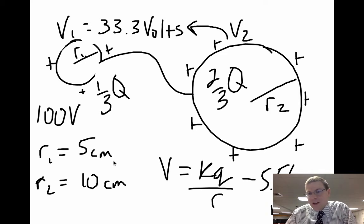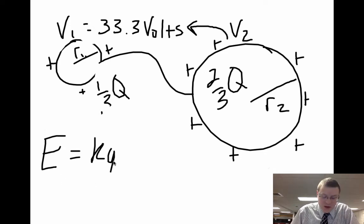Now another thing that can be asked here is what about the electric field strength on each of these spheres? Well, to solve for electric field, we can treat both of these as point charges and find the electric field strength as KQ over R squared. Since we know the charge and we know how big the radius is, we can solve for each of their electric field strengths.